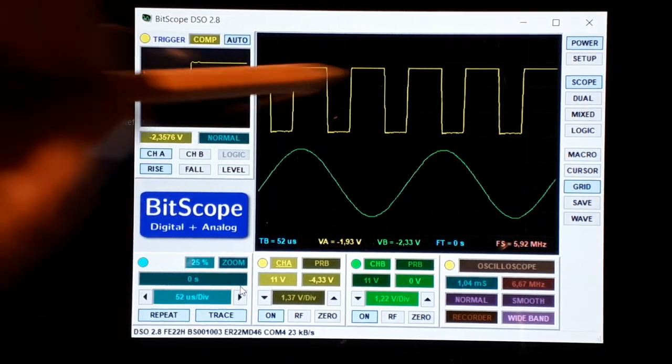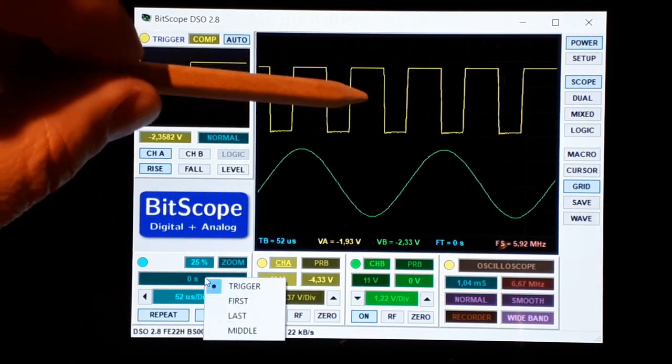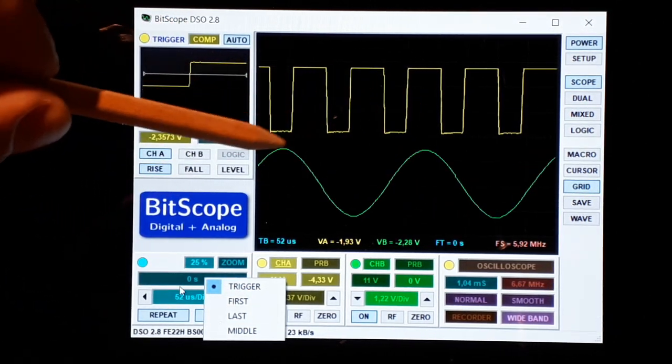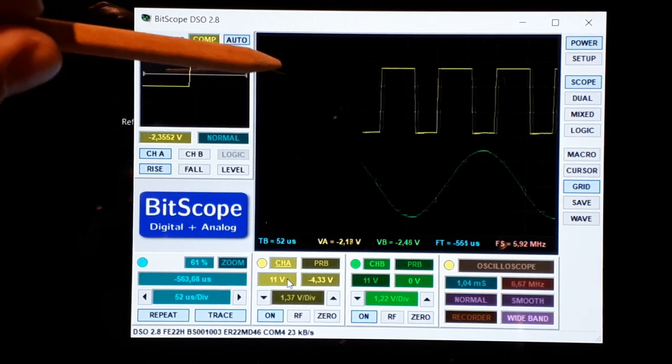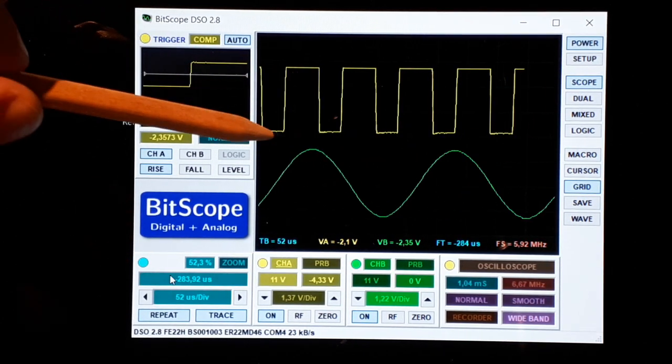Then you have more things than the trigger. Here is the trigger point, so you have the trigger point but also you have some more information stored before that. So you could analyze what happened before the trigger point.